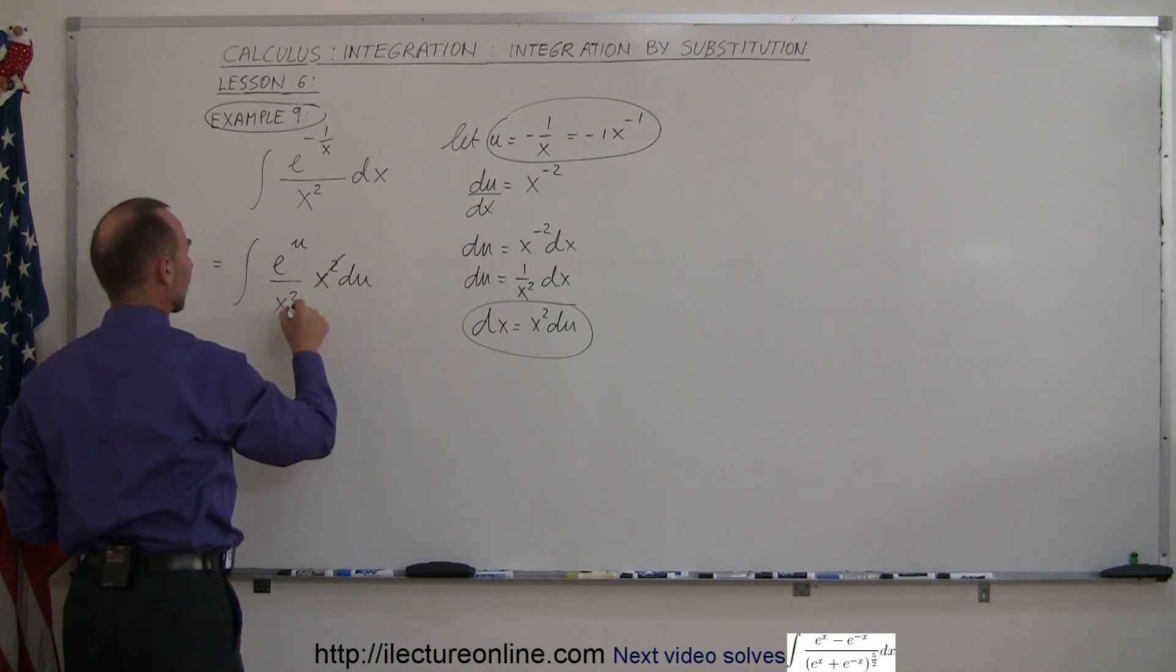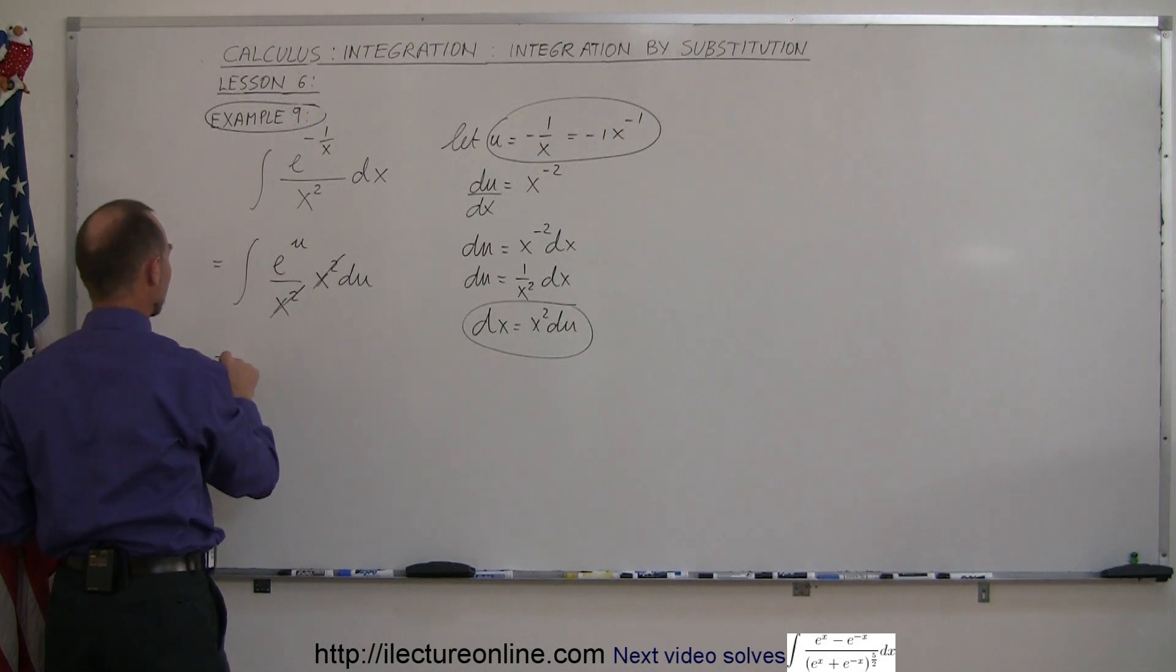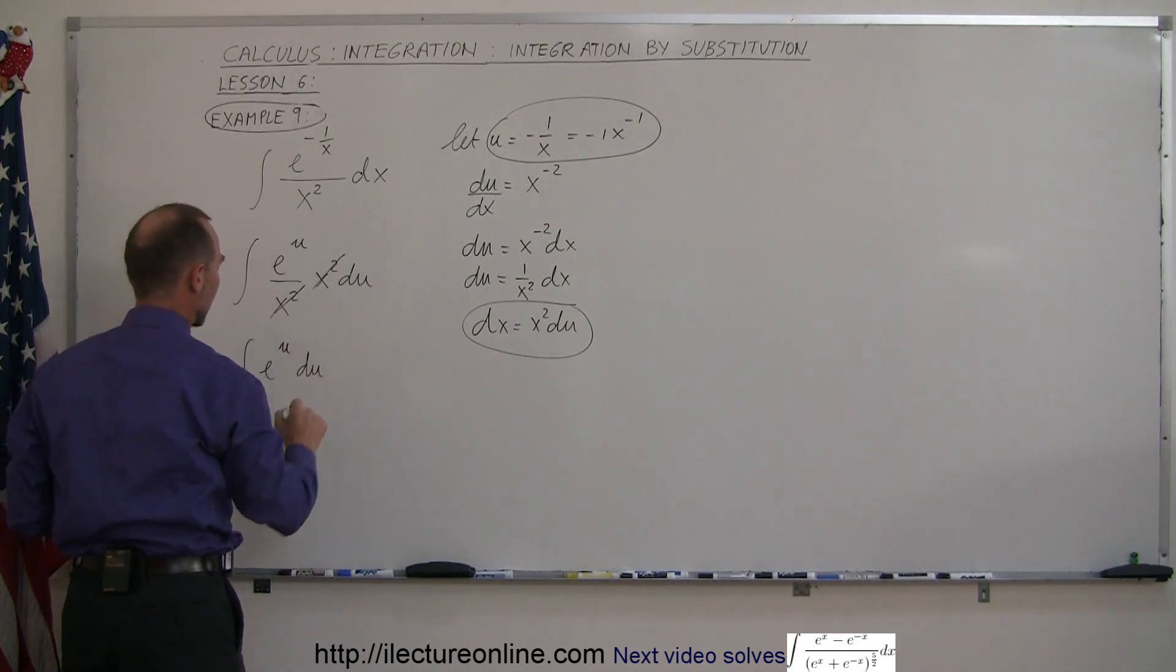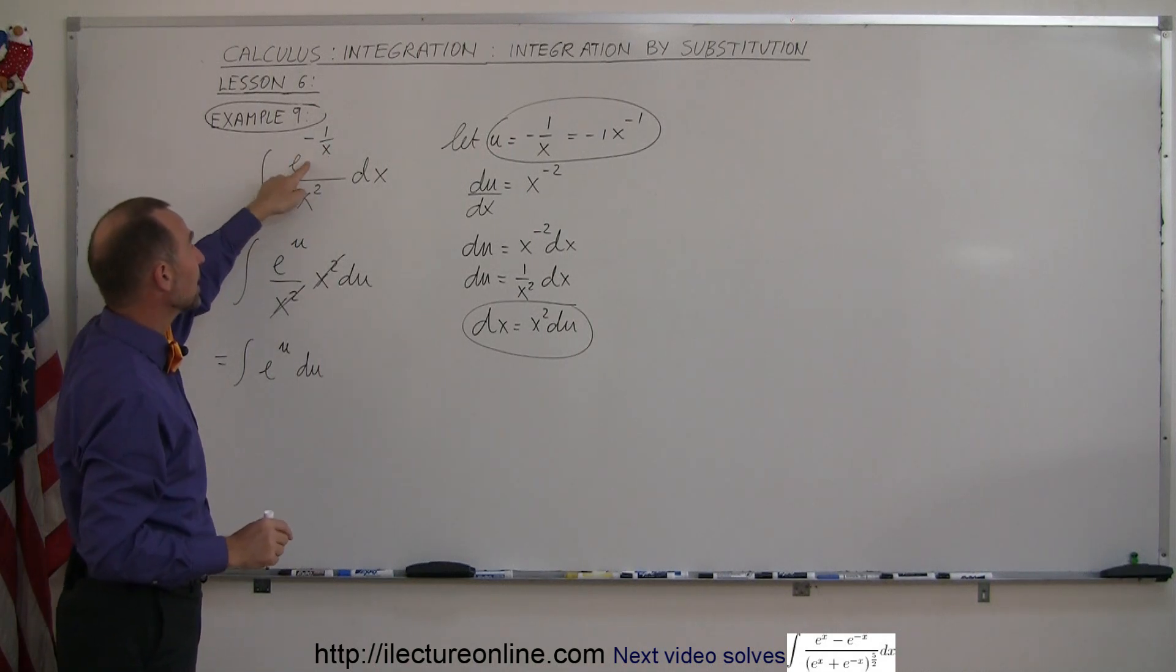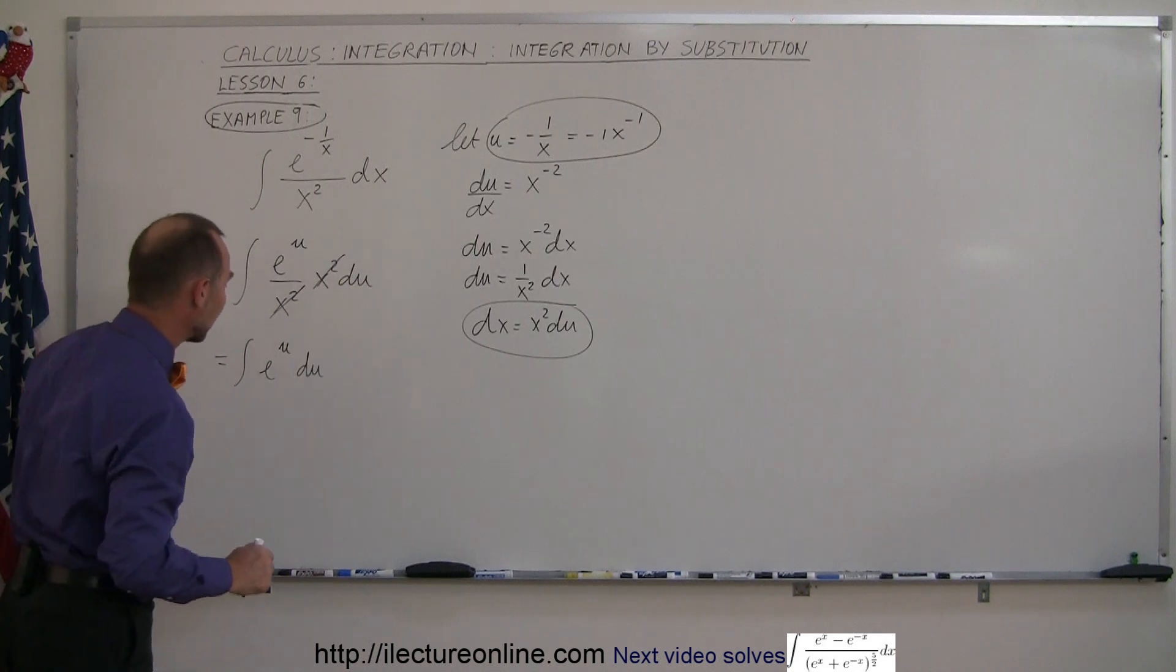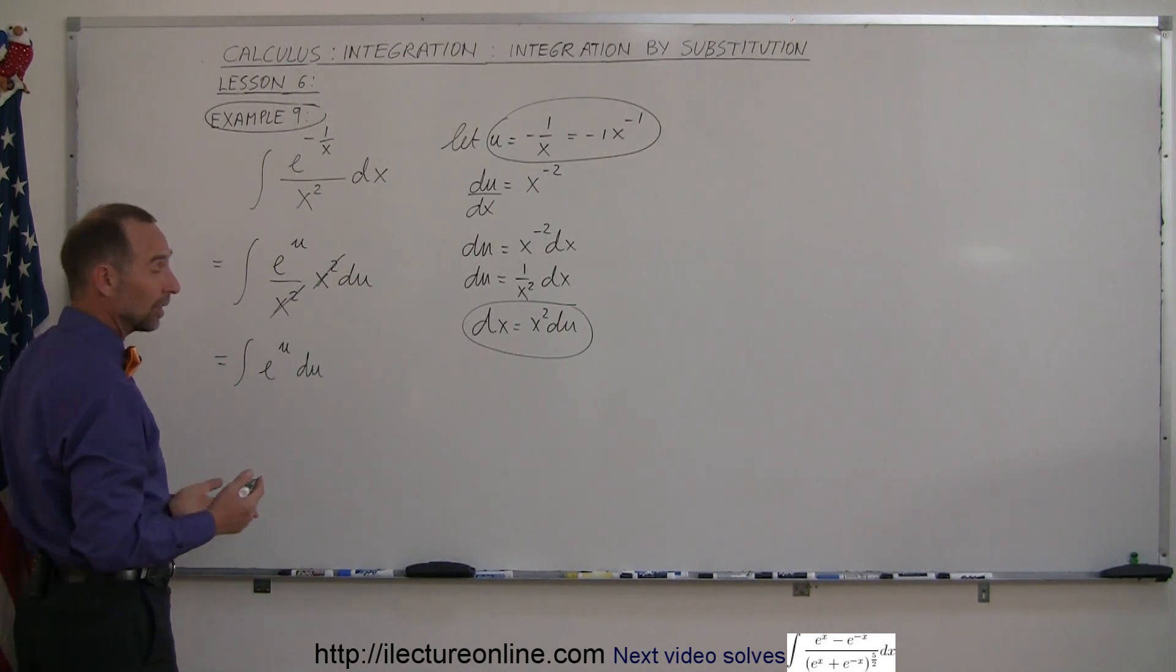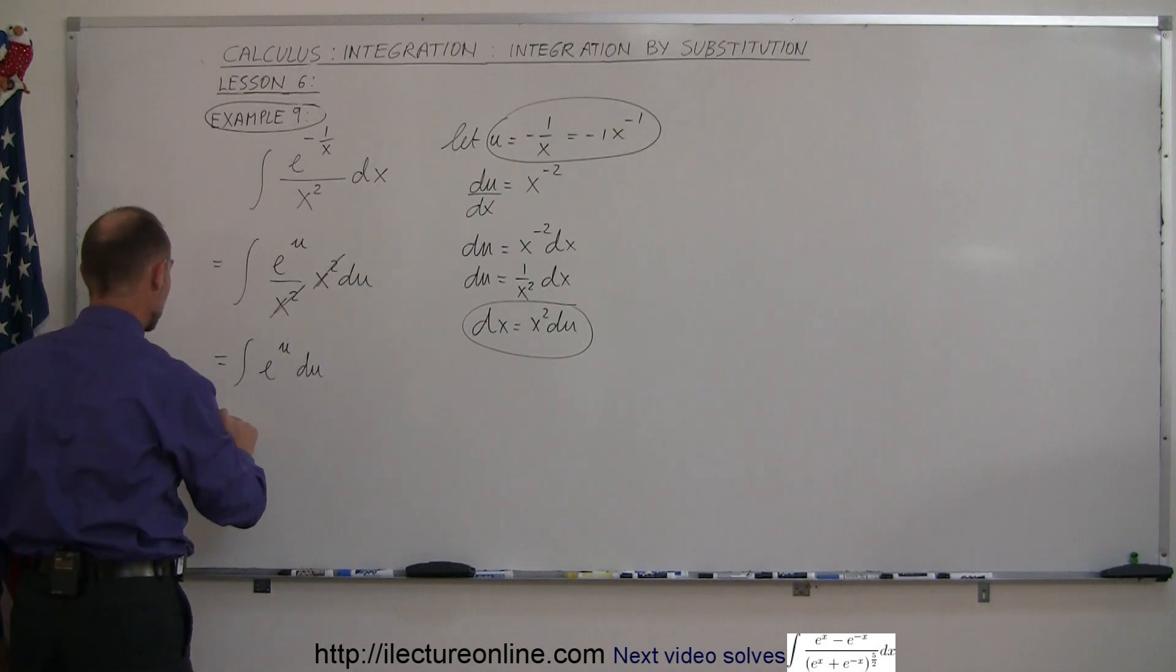And then notice that this x squared cancels that x squared, and we simply end up with e to the u du. So the trick here was, take what the exponent is for e, and replace that by u, and then you can see that the problem simplifies to the form that's easy to integrate, because e to the u du is e to the u.